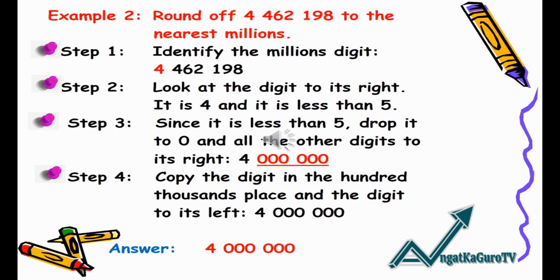Example 2: Round off 4,462,198 to the nearest millions. Step 1: Identify the millions digit — in this case it's 4. Step 2: Look at the digit to its right — it is 4 and it is less than five. Step 3: Since it is less than five, drop it to zero in all the other digits to its right.